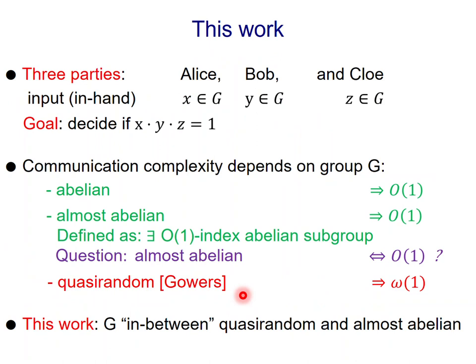Things get more interesting if you have three parties, and this is the focus of this work. So now we have Alice, Bob and Chloe, and they each receive an input. We work in the basic number-in-hand model. So Alice knows X, her input, Bob knows Y, and Chloe knows Z. And again, they want to decide if X times Y times Z is equal to 1.